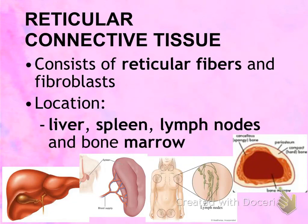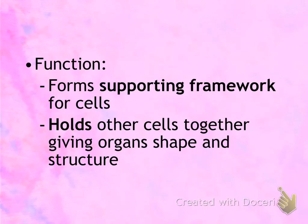The next connective tissue is reticular connective tissue. It is named for the reticular fibers it consists of. Locations include the liver, the spleen, the lymph nodes, and the bone marrow. The function of reticular connective tissue is to form the supporting framework for the cells of those organs — the cells of the liver, spleen, lymph nodes, and bone marrow are held together by reticular connective tissue.